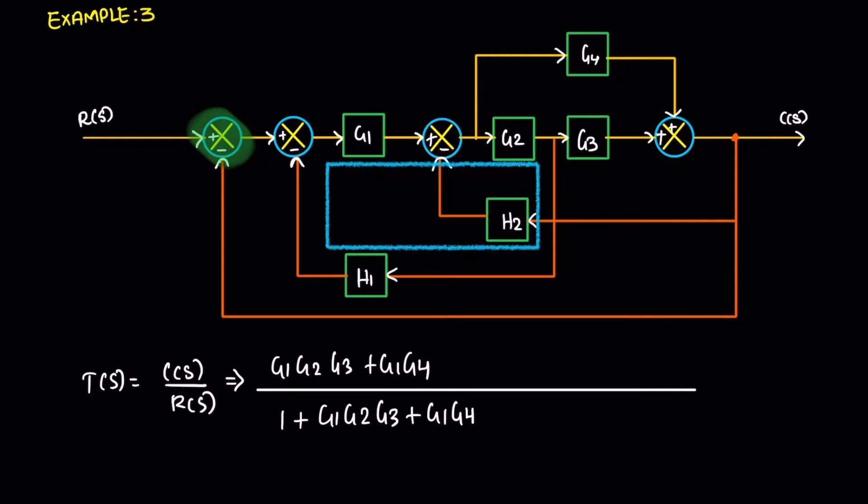Next one, this feedback. The value is negative. Negative feedback, so the meaning is a positive value. The product of G1, G2, and H1.